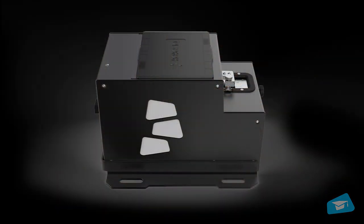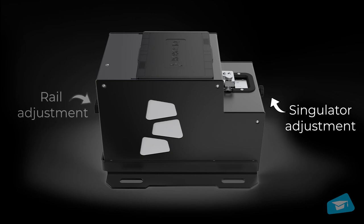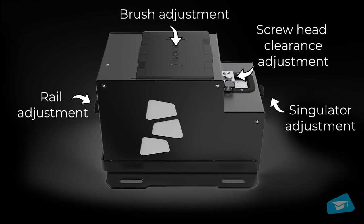There are four adjustments on the screw feeder: the screw singulator adjustment, the rail adjustment, the brush adjustment, and the screw head clearance adjustment.